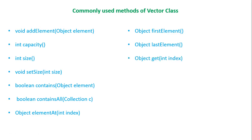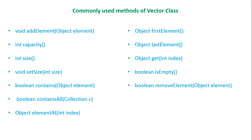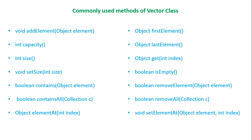The get method returns the element at a specified index given as a parameter. The isEmpty method returns true if the Vector has no elements — the return type is Boolean. The removeElement method removes the specified element from the Vector. The removeAll method removes all elements from the Vector that are present in collection C. The setElementAt method takes two parameters — the element and the index value — and updates the element at the specified index.